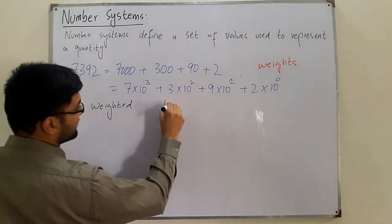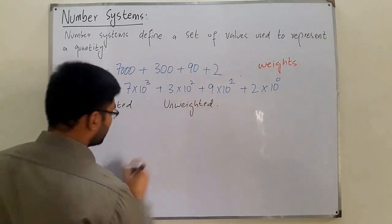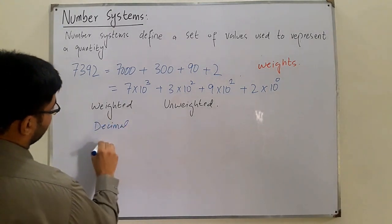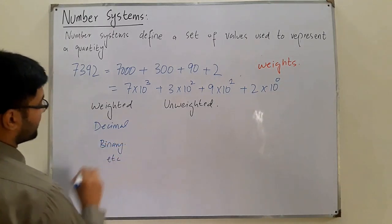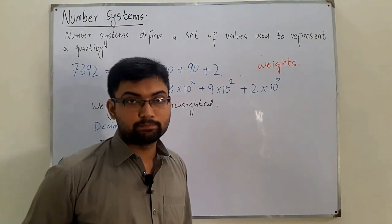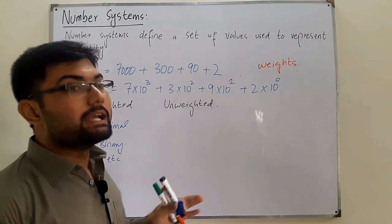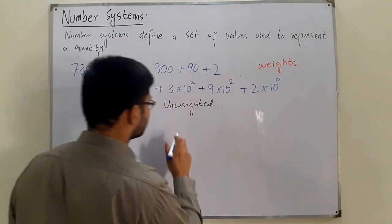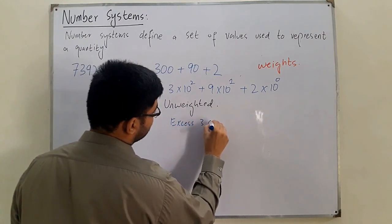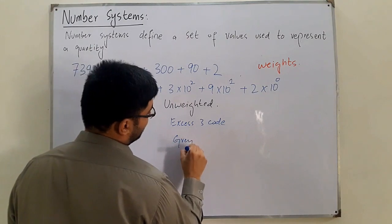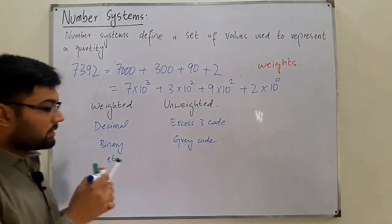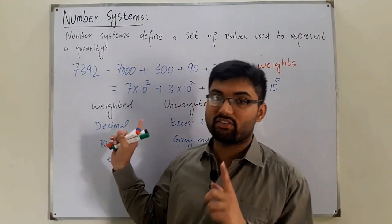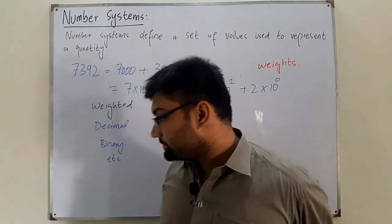So we have weighted and unweighted number systems. A weighted number system is one where each digit has a proper weight — for example the decimal system, binary, and so on. An unweighted system is one where each digit does not have a proper weight, for example XS3 code or gray code — though gray code is probably not in our course. These are examples of unweighted systems.